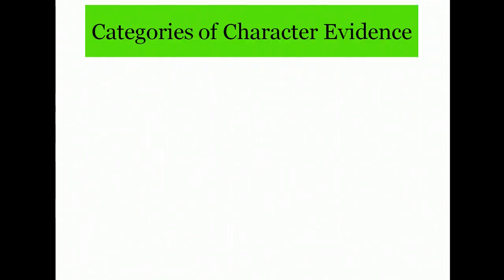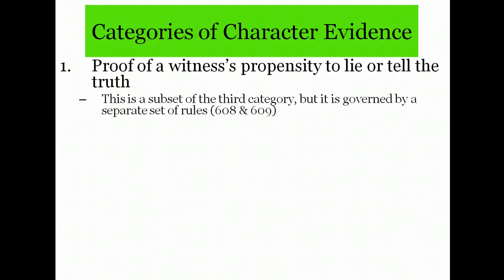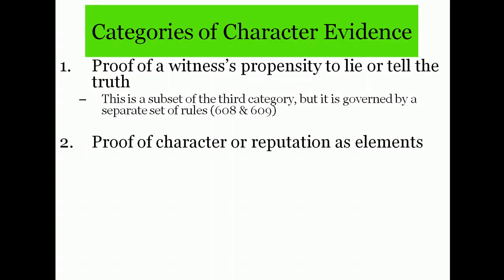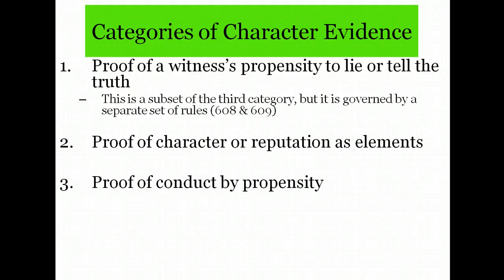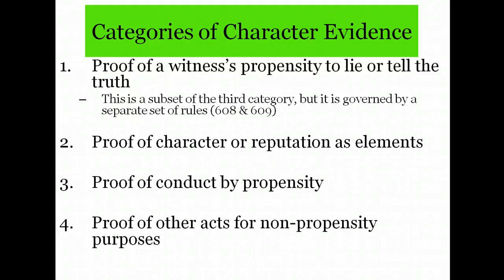It's helpful to divide character evidence into four categories. Category one: proof of a witness's propensity to lie or tell the truth. Two: proof of character or reputation as elements. Three: proof of conduct by propensity. And fourth: proof of other acts for non-propensity purposes. Let's look at how each one of these categories involves the use of character or propensity evidence.